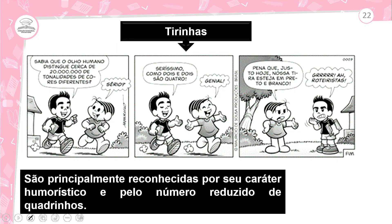Outra tirinha: 'Sabia que o olho humano distingue cerca de 20 milhões de tonalidades de cores diferentes?' — 'Sério? Seríssimo, como 2 e 2 são 4.' — 'Genial. Pena que nossa tira esteja em preto e branco.' O personagem fica com raiva. Ele fala que consegue ver muitas tonalidades diferentes, mas a tirinha foi feita em preto e branco. A tirinha é principalmente reconhecida por seu caráter humorístico e pelo número reduzido de quadrinhos — no máximo até 5.